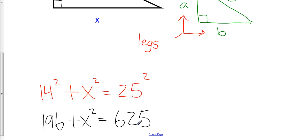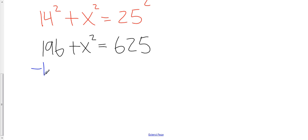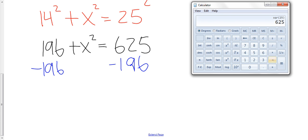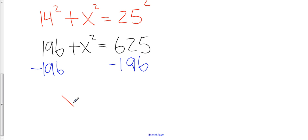Now I need to solve this equation for x, and to do that I need to isolate x squared on the left-hand side. So we're going to subtract 196 from both sides. That leaves just x squared on the left. 625 minus 196 is 429, so x squared is equal to 429.